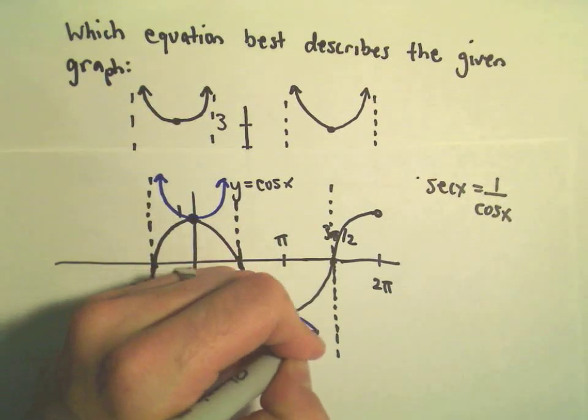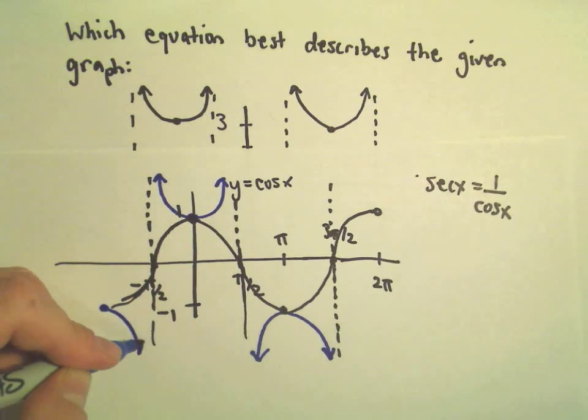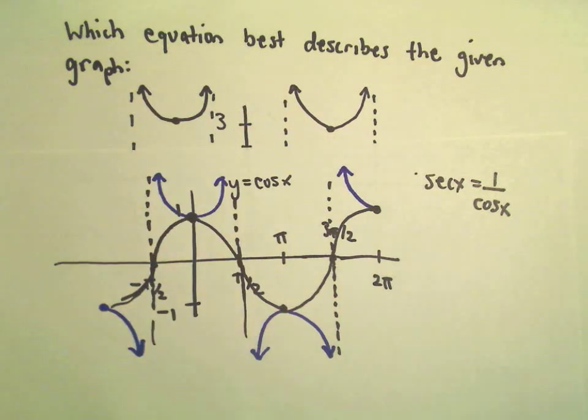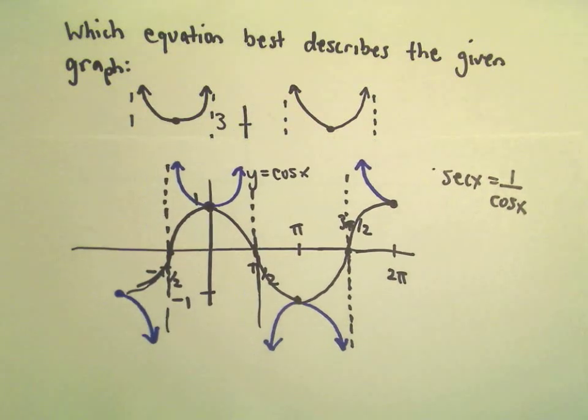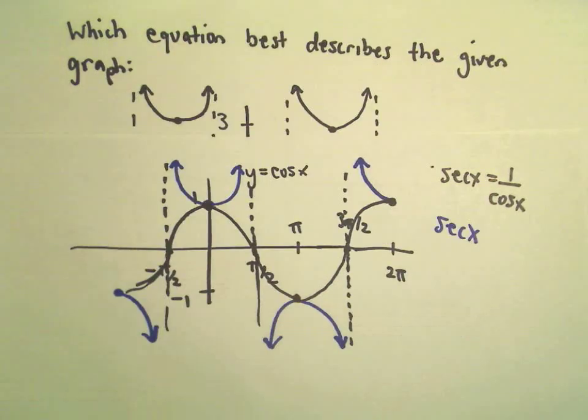It's trapped between those asymptotes, so we'll get another little portion of the graph over here, another little portion coming up here, and it just repeats itself. So in the blue we have secant x, hopefully that shows up fairly well.